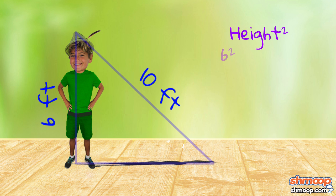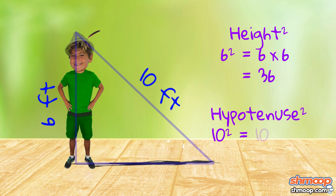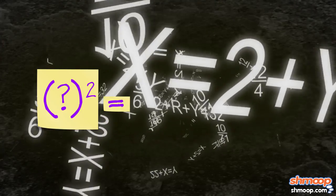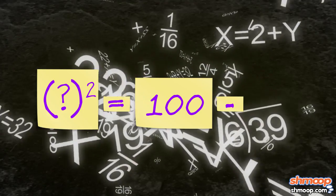Peter is 6 feet tall. His height squared is 36, while the desired distance from the head of his shadow squared is 10 squared, or 100. So Peter needs his shadow to be a number that, when squared, makes up the difference between 100 and 36.